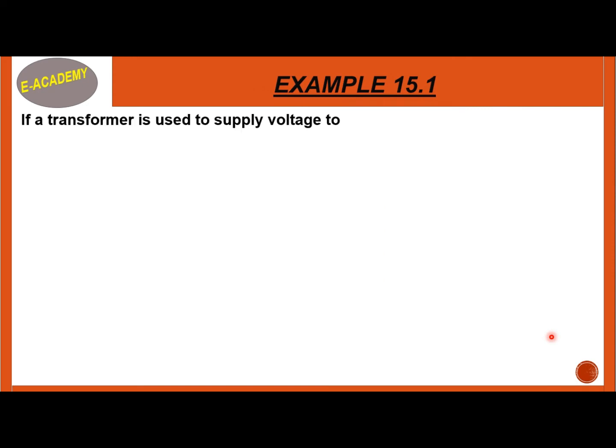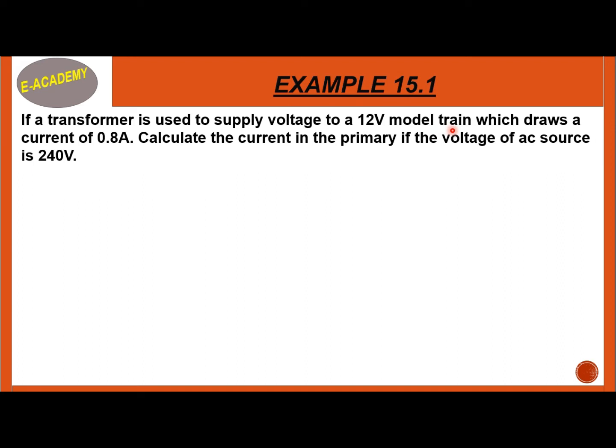Example 15.1: If a transformer is used to supply voltage to a 12V model train which draws a current of 0.8A, calculate the current in the primary if the voltage of AC source is 240V. What is given to us? The voltage supply is 12V, current is 0.8A. We need to find the current in the primary, that is IP, and the AC source voltage is 240V.